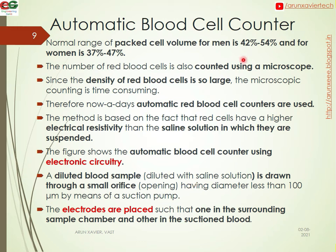The number of red blood cells is also counted using a microscope. However, since the density of red blood cells is very large, microscopy counting is time-consuming. Therefore, automatic red blood cell counters are used. The method is based on the fact that red blood cells have higher electrical resistivity than the saline solution in which they are suspended.